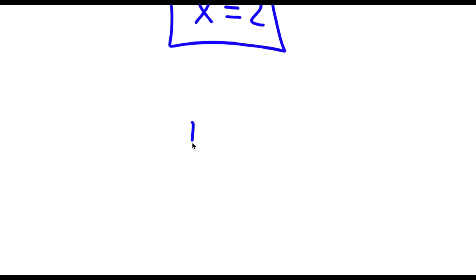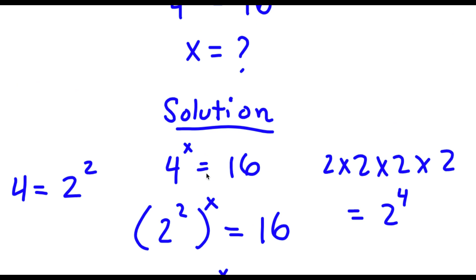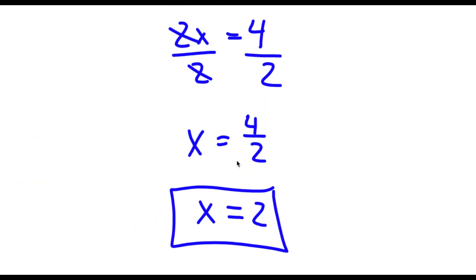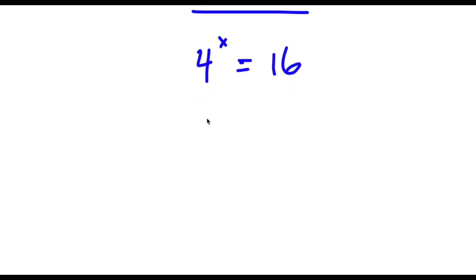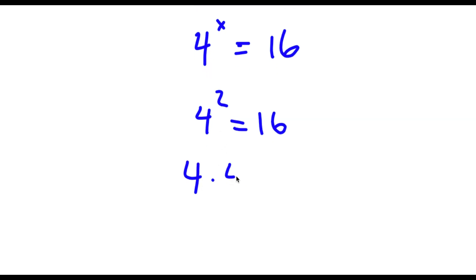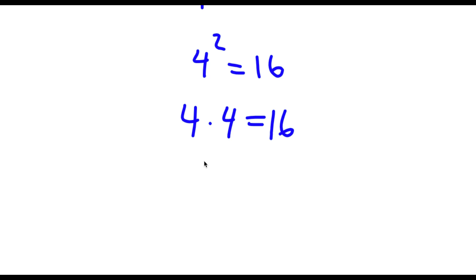So now to check — I had 4 to the power of x is equal to 16. Now we have x equals 2, so I have 4 to the power of 2 is equal to 16. 4 to the power of 2 is the same thing as 4 times 4, and 4 times 4 is 16. So I have 16 is equal to 16.